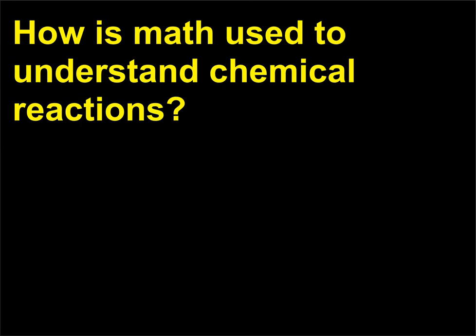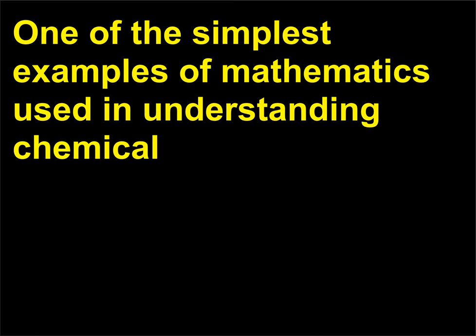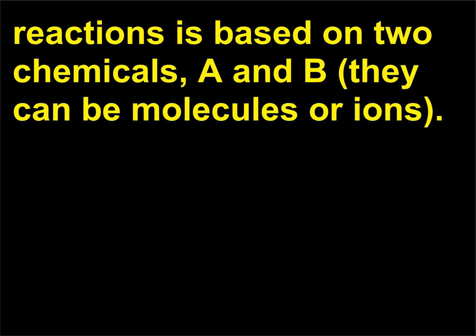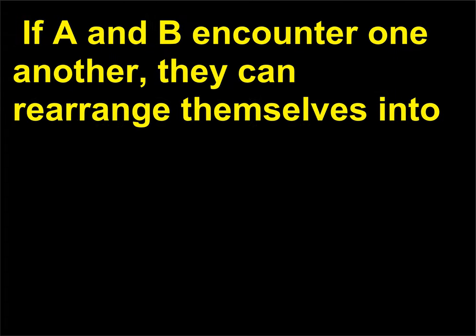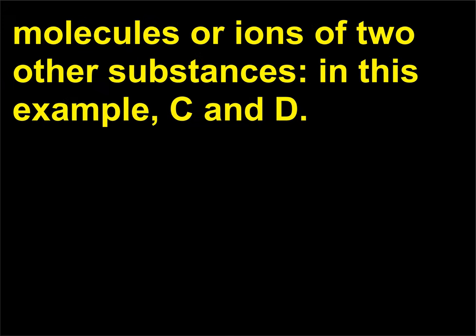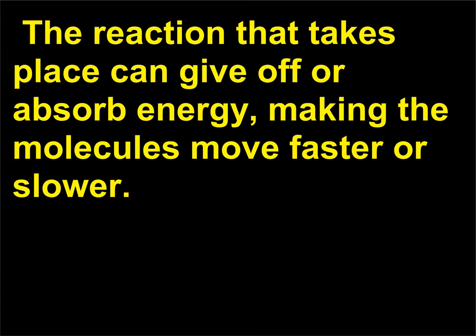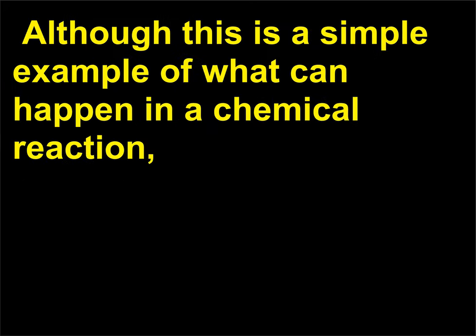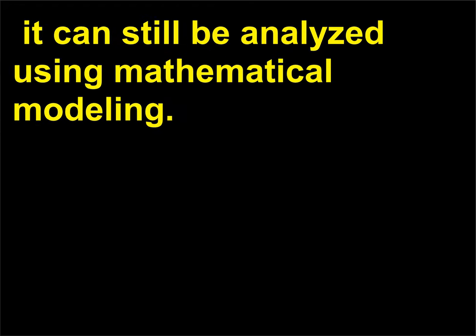How is math used to understand chemical reactions? One of the simplest examples of mathematics used in understanding chemical reactions is based on two chemicals, A and B — they can be molecules or ions. If A and B encounter one another, they can rearrange themselves into molecules or ions of two other substances, in this example C and D. The reaction that takes place can give off or absorb energy, making the molecules move faster or slower. Although this is a simple example of what can happen in a chemical reaction, it can still be analyzed using mathematical modeling.